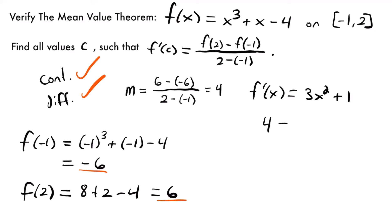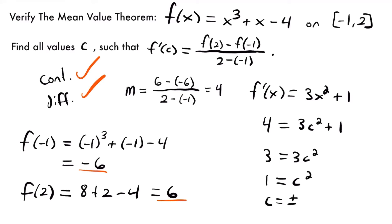Setting 4 = 3c² + 1 allows us to solve for values of c where the derivative equals 4, the slope between our two endpoints. Subtracting 1 from both sides gives 3 = 3c², then dividing by 3 gives 1 = c², and taking the square root gives c = ±1. We have two values, but the mean value theorem only looks for c between the two endpoints. Since negative 1 is actually one of our endpoints, we exclude it. So c = 1 is our value that verifies the mean value theorem applies to this function on this interval.